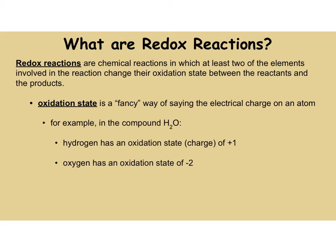How do you determine oxidation state? Let's take a look at the compound H₂O. All compounds have to be electrically neutral. So if this compound is H₂O, we know that oxygen with six electrons is going to have a minus two charge. Hydrogen with one valence electron is going to have a plus one charge. So we say the oxidation state of hydrogen is plus one, and the oxidation state of oxygen is minus two.